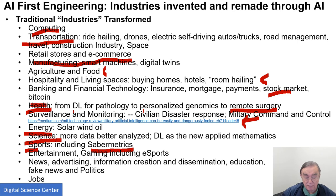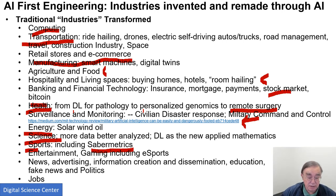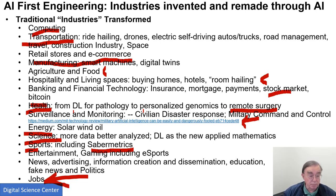Then there is the whole information area: news, advertising, fake news, politics, and education — a huge and very popularized area. And finally, what's most interesting for students: jobs. Jobs are changing, and finding jobs could be supported using recommender engines, probably best done using deep learning. You can match employers to employees in a better fashion.